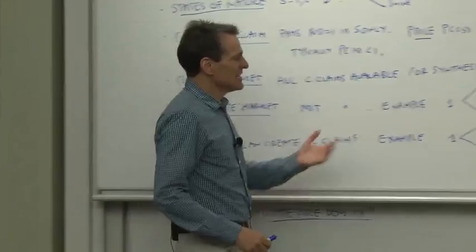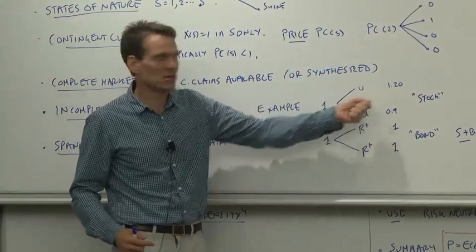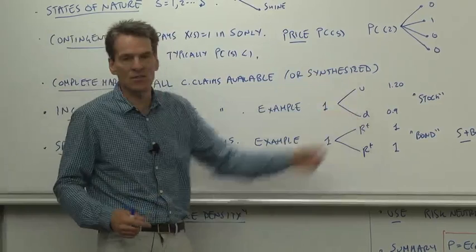If that's the only asset available, you have an incomplete market. You have to buy this bundle. You can't get either U or D separately.